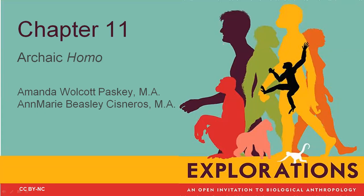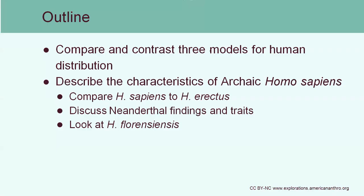Welcome back to Physical Anthropology. Today we're looking at Chapter 11, the archaic members of the genus Homo — those species that came after Homo erectus but before modern-day Homo sapiens. We're going to compare and contrast three different models for human distribution, then look at specific members of the archaic Homo sapiens including Homo erectus, the Neanderthals, and Homo floresiensis.